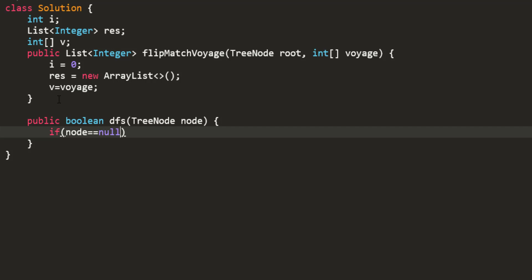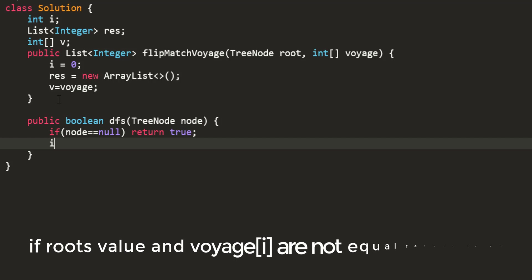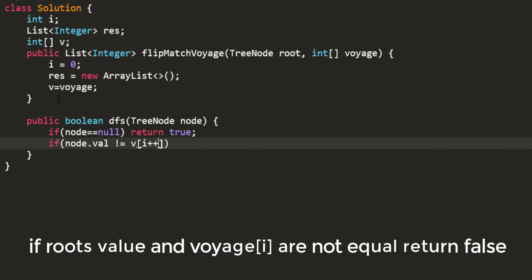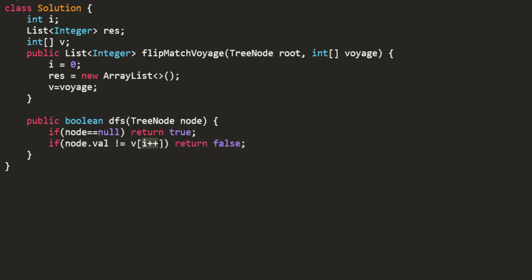Otherwise if my node's value is not equal to the ith value from my voyage then I'll return false. Over here I am doing an i plus plus because for the next steps we would need to go on the left and right of the tree.